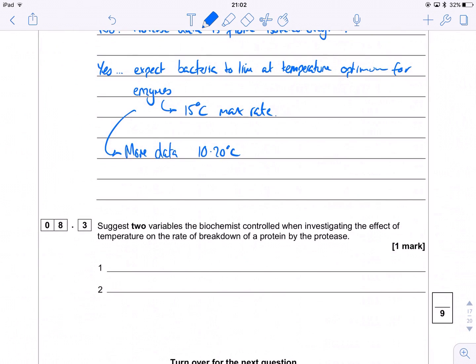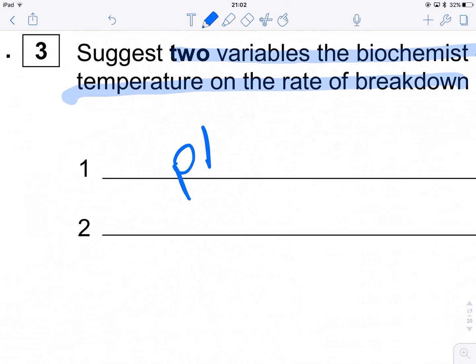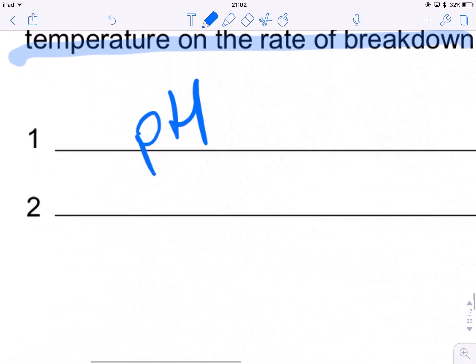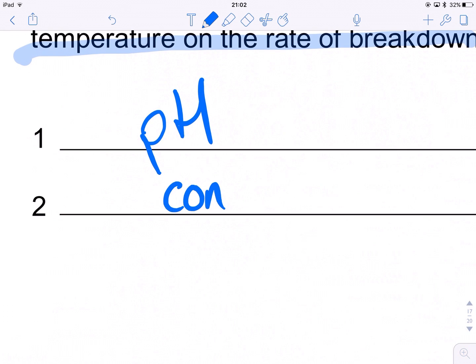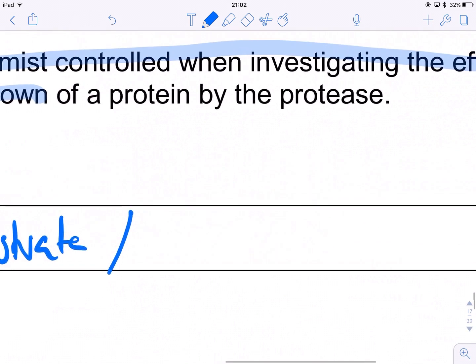What else do we need to have here? Two variables that could mess with the experiment. So obviously when you think of enzymes, you all are going to be thinking pH. Because pH messes with enzymes. And the other thing you could mention would, of course, be maybe the concentration of the enzyme or the concentration of the substrate. So we could go for concentration of enzyme. Let's go for substrate, actually. Or enzyme. And that will get us our marks.